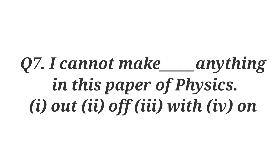Question number seven: I cannot make dash anything in this paper of physics. Options are: out, of, with, on.